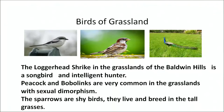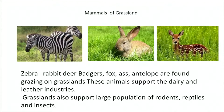These are some of the common birds found in the grasslands. The loggerhead shrike is a songbird and a very intelligent hunter. Peacocks and bobwhites are very common in the grasslands, showing sexual dimorphism. Sparrows are shy birds and they live and breed in tall grasses. Zebras, rabbits, foxes and antelope are found as grazers in the grasslands. These animals support the dairy and leather industry worldwide. The grasslands also support large populations of reptiles, rodents and insects.